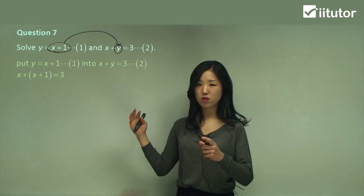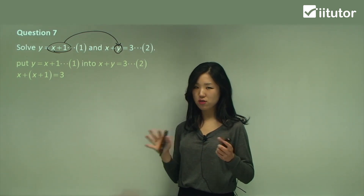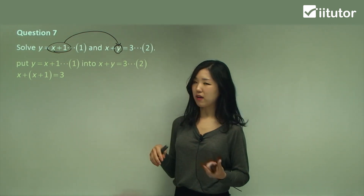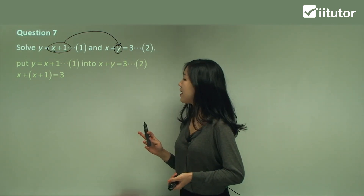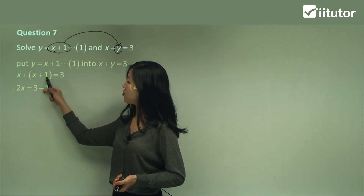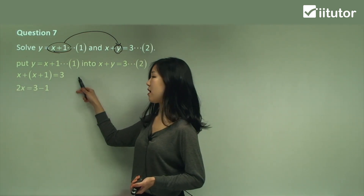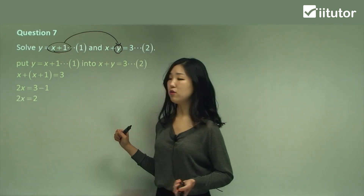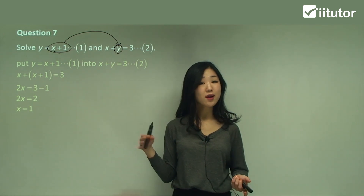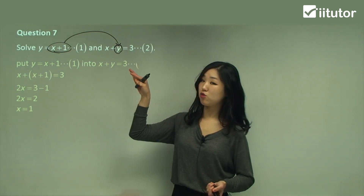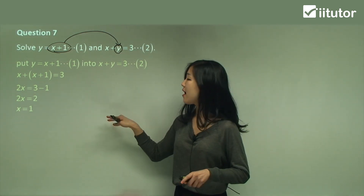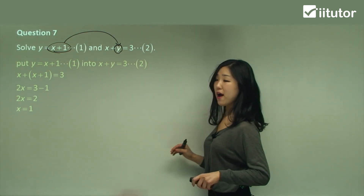Always use brackets just so you can keep track. So x plus x is 2x, and I'm going to move the one over to the other side, making it minus one. Three minus one is two. Divide both sides by two and get x equals one. After using the substitution method, we're left with just x, so expand and simplify — I've found x.